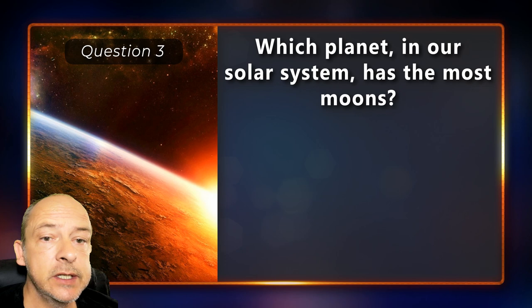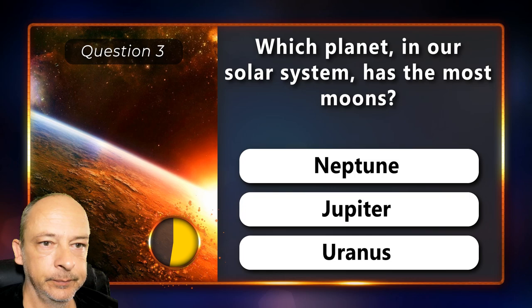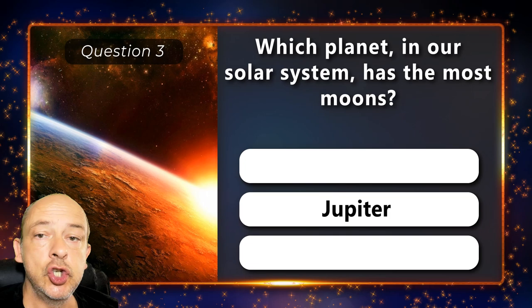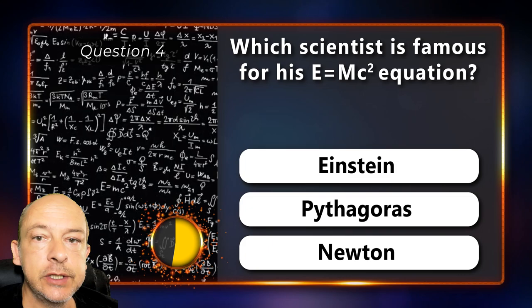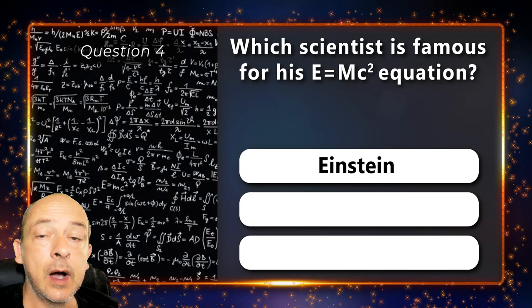Which planet in our solar system has the most moons — is it Neptune, Jupiter or Uranus? Jupiter. Which scientist is famous for his E equals mc squared equation — is it Einstein, Pythagoras or Newton? Einstein.